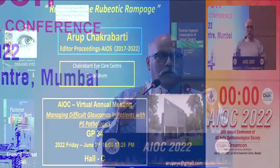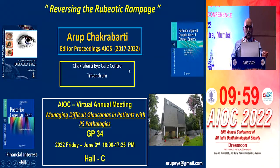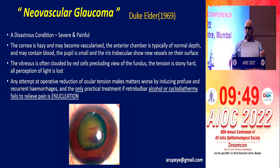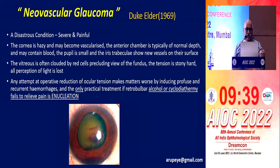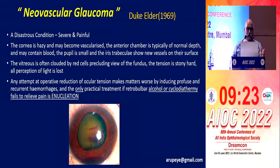Good afternoon, friends, and thank you, Dr. Meena, for having me here. I will be talking on neovascular glaucoma. Way back, Duke Elder described neovascular glaucoma as a disastrous condition with very poor eventual outcomes. He reflected that any surgery done for neovascular glaucoma only exacerbates the condition with many post-operative complications, and that the patient may ultimately require a retrobulbar injection of alcohol, cyclodothermy, or enucleation as the final surgical approach.